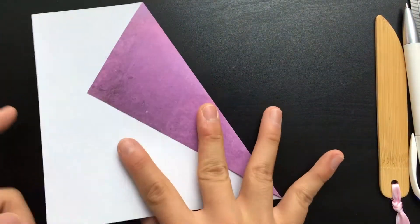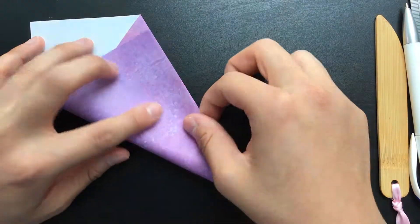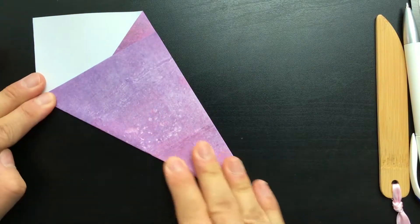First fold along the line you just made and then take the bottom edge and fold it to the edge of the fold you just made so that you'll get something kind of like a kite or an ice cream cone.